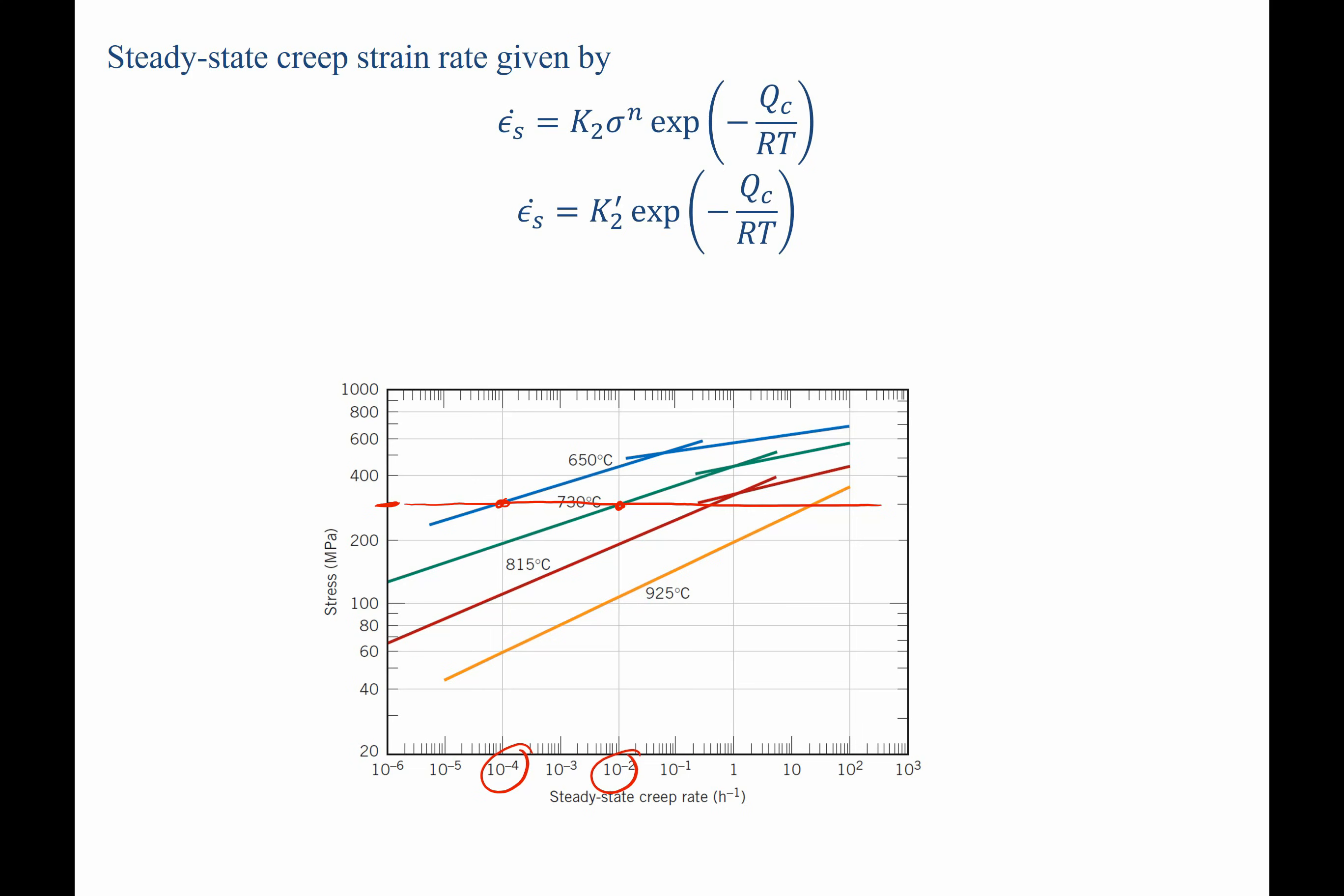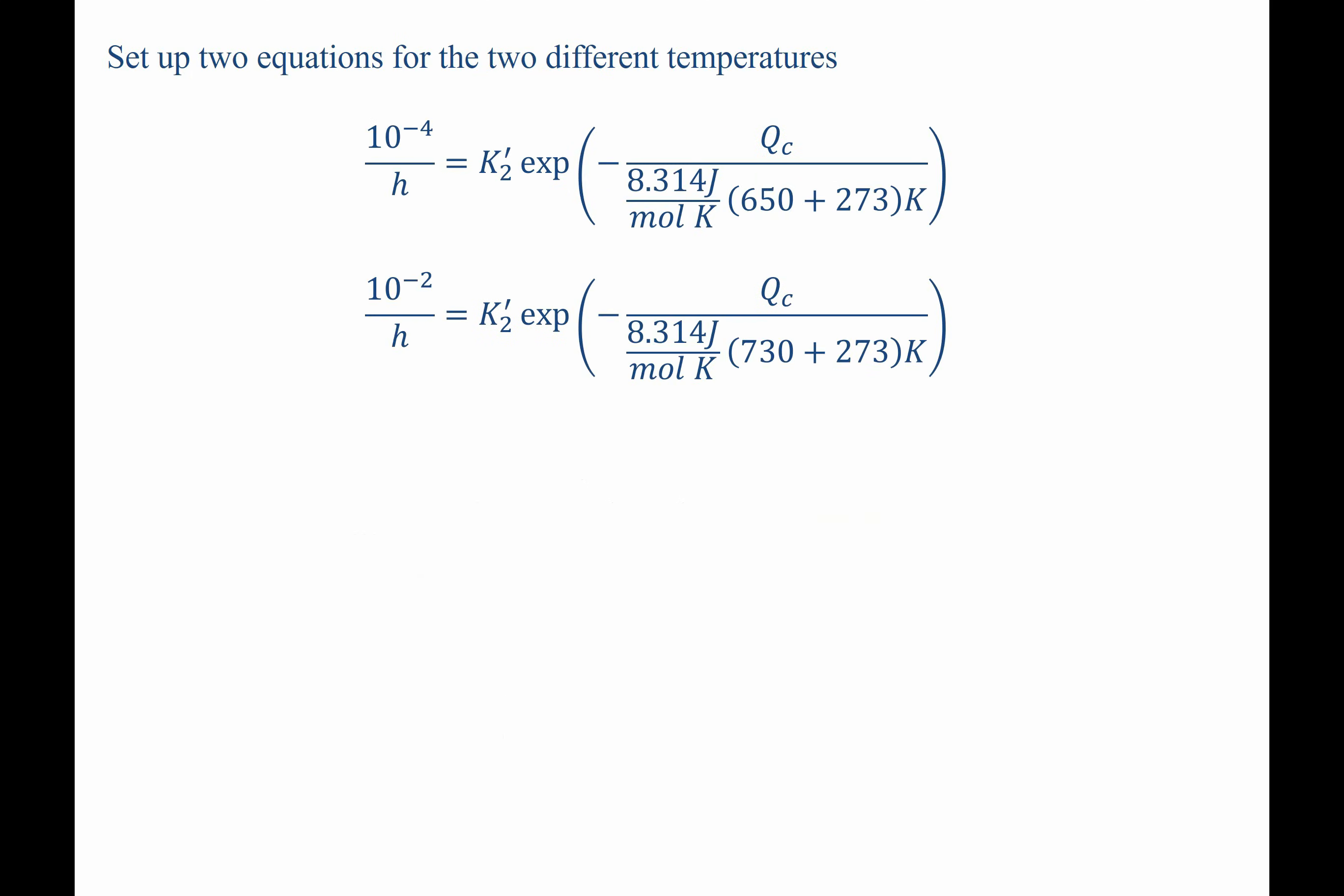Now that we have those two values, we can go ahead and plug in for two equations with two unknowns. Here's our steady state creep strain rates for both temperatures. And we have the two different temperatures in these expressions. Now, there's a number of ways to solve for this.